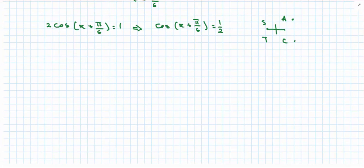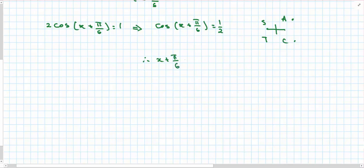So x + π/6, based on our general solution, would be 2nπ plus or minus π/3, where n is an integer.